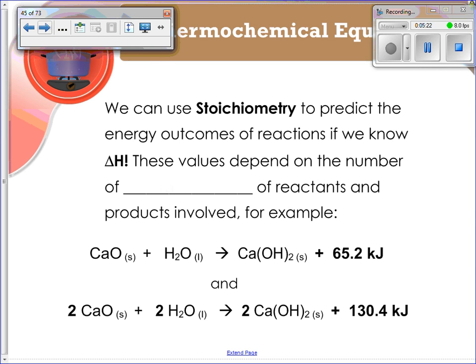So we can use stoichiometry to predict the energy outcomes of reactions if we know the change in H. That's the enthalpy change. These values depend on the number of moles of the reactants and the products that are involved. So for example, and we talked about this in that kind of first example that we did.